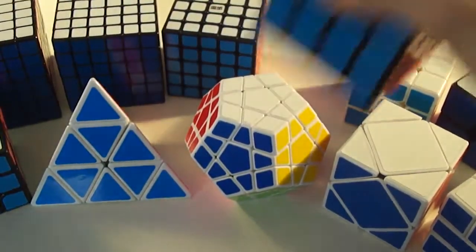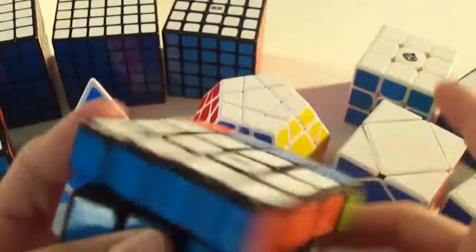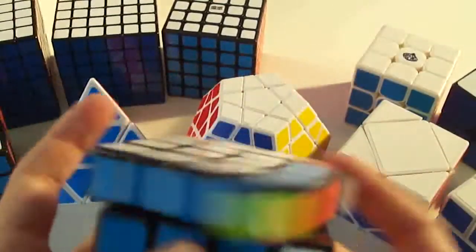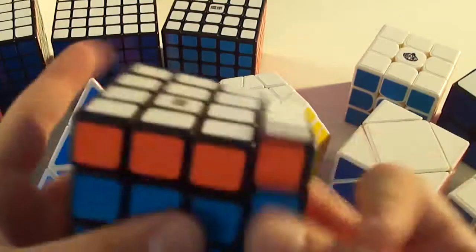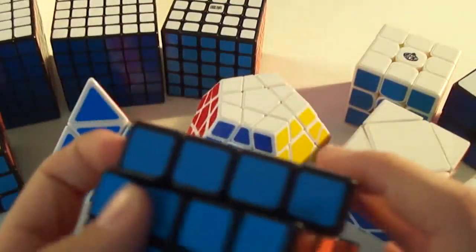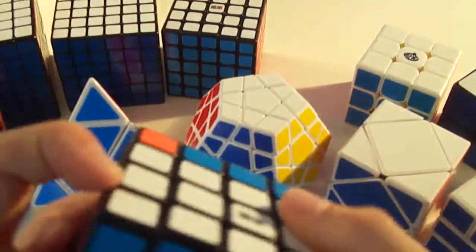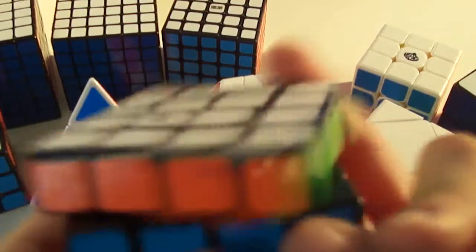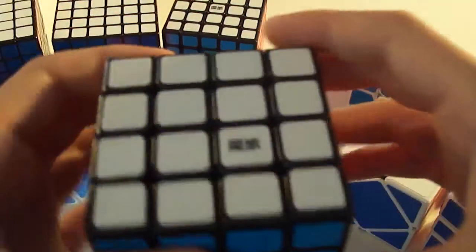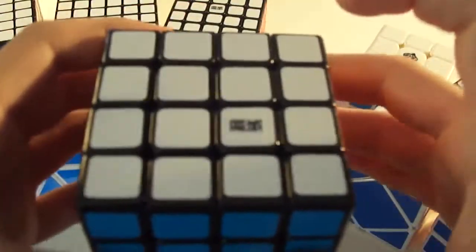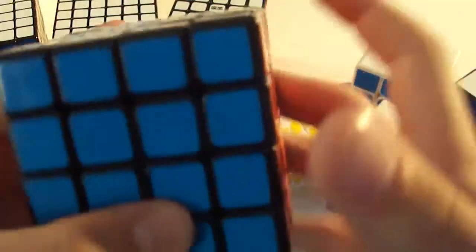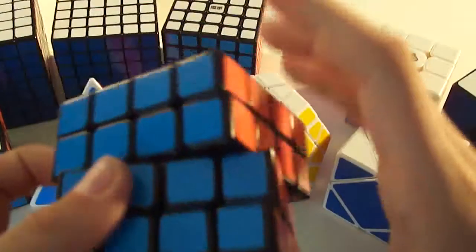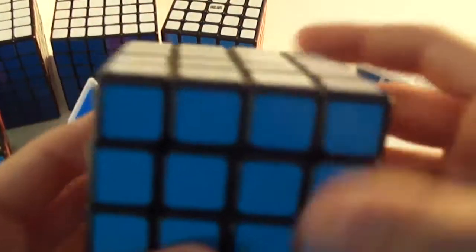For 4x4, I finally got a black Aosu. By finally, I mean I've had it for like a month, but in the last mains video I didn't have a black Aosu. The Aosu is just a great 4x4. I have tried the Yuxin, and I'm not sure if it would be my main because I don't have one, but it is pretty good from what I've tried.